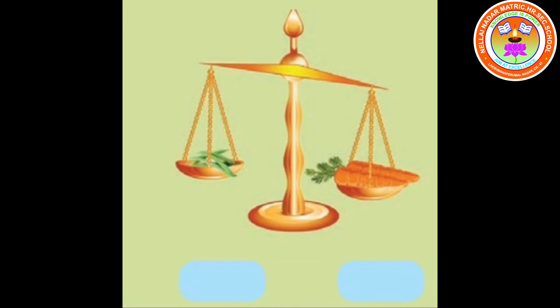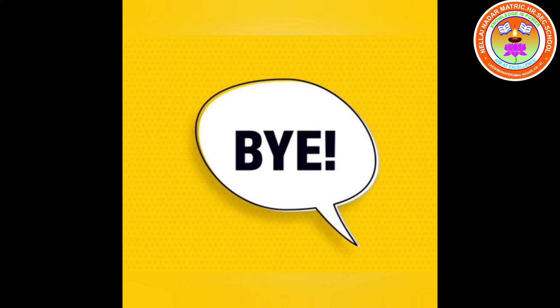Beans, carrots. Which vegetable is light? Beans is light weight and the carrot is heavy weight. So, tick the beans and cross the carrot. Thank you children. Bye.